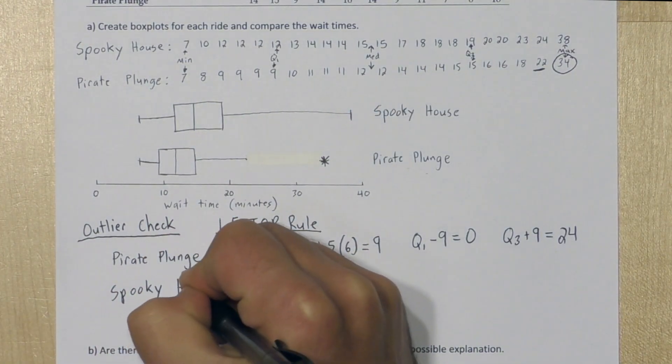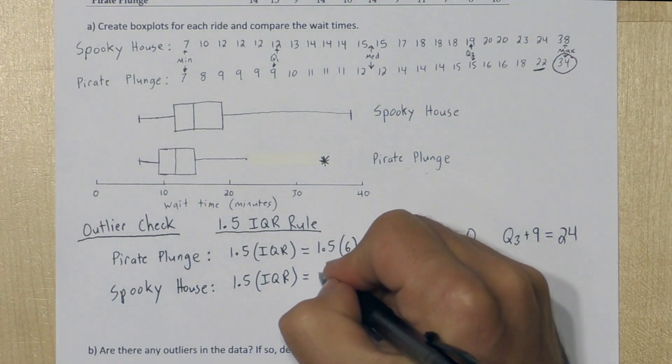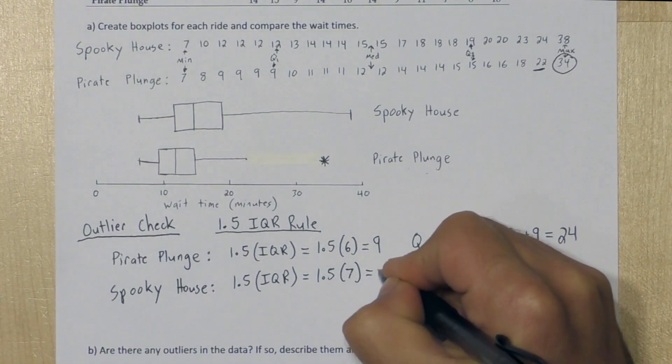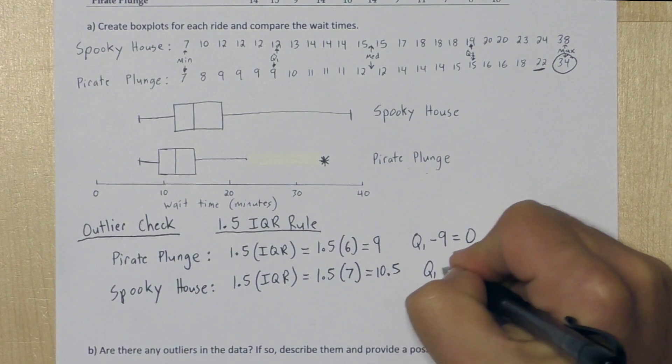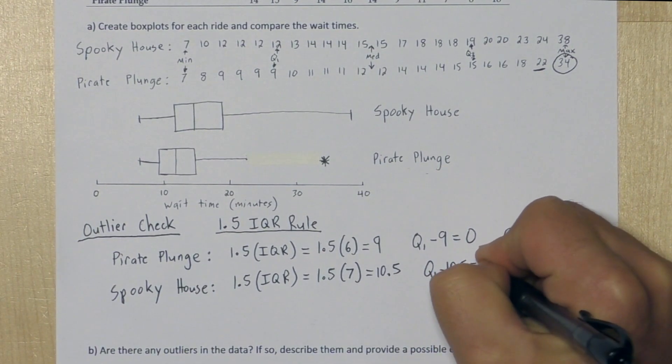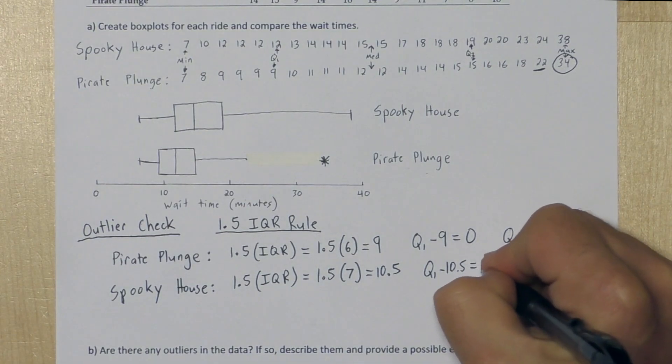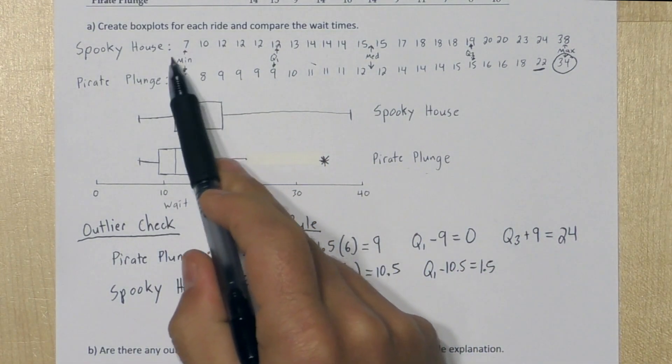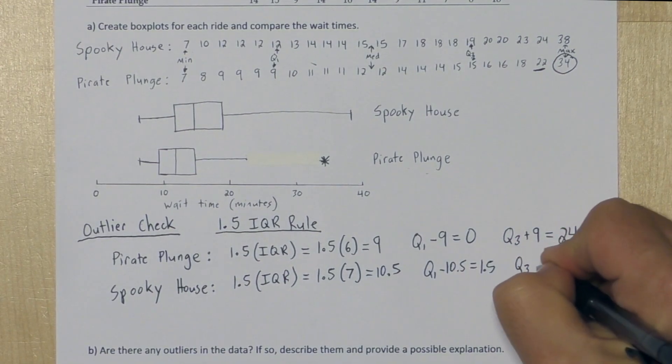Now let's do the same thing for Spooky House. We're going to use the 1.5 IQR rule. So for Spooky House, quartile 3 is 19, and quartile 1 is 12. So the inner quartile range is 7. When we multiply that by 1.5, we get 10.5. So let's take quartile 1 and subtract 10.5 to check for lower outliers. So quartile 1 for Spooky House is 12, minus 10.5 is 1.5. And looking up here, no one waited 1.5 or less minutes. So we have no lower outliers again.